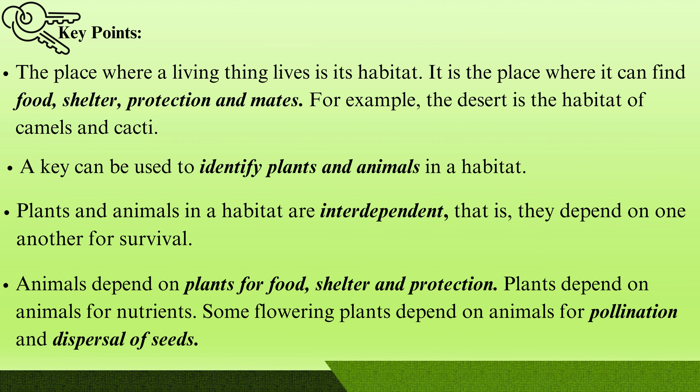Now we will discuss the key points. The place where a living thing lives is its habitat. It is a place where it can find food, shelter, protection and mates. For example, the desert is the habitat of camels and cacti. A key can be used to identify plants and animals in a habitat.